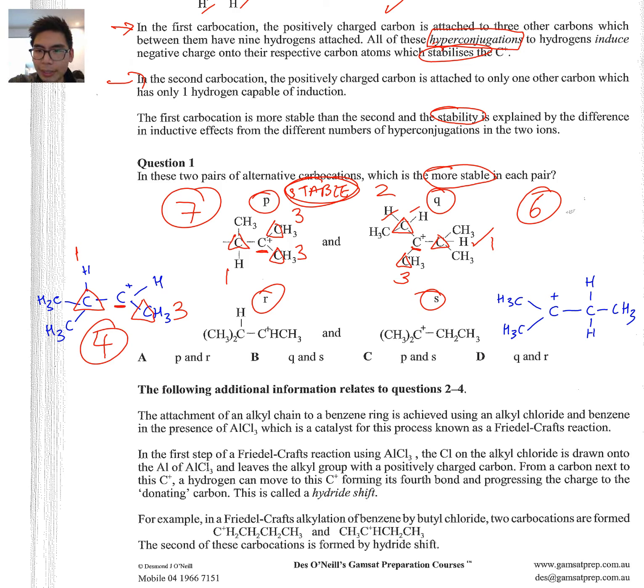If we go to molecule S, C+, this has three neighboring carbons. We've got three hydrogens here, and we've got two over here. So in total, that's eight. So again, the more hyperconjugations, the more stable. And so in this case, S is the more stable out of the two.